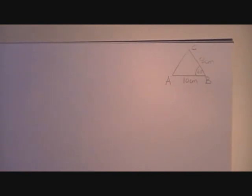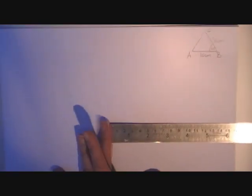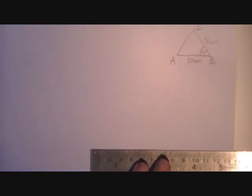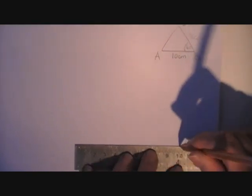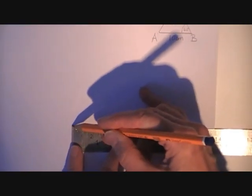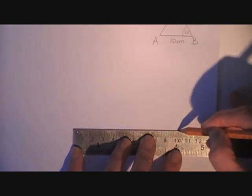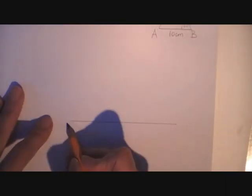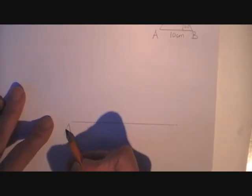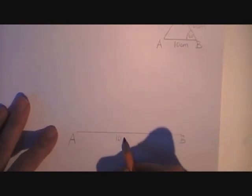Now I draw the accurate diagram which is called the construction. So I take my ruler and I'm following my sketch and I measure out 10cm. Now this ruler starts at 0 so I have to go right to the edge and go across to 10cm. Take away the ruler and label the two endpoints A and B.